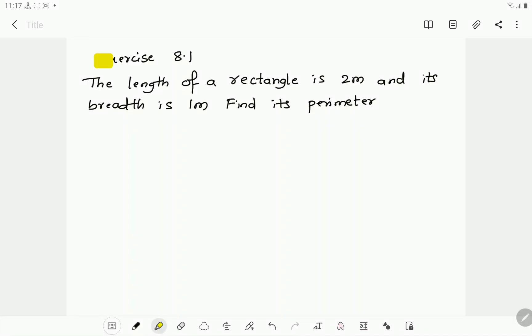Take the question from exercise 8.1. The length of a rectangle is 2 meters and its breadth is 1 meter. Find its perimeter.